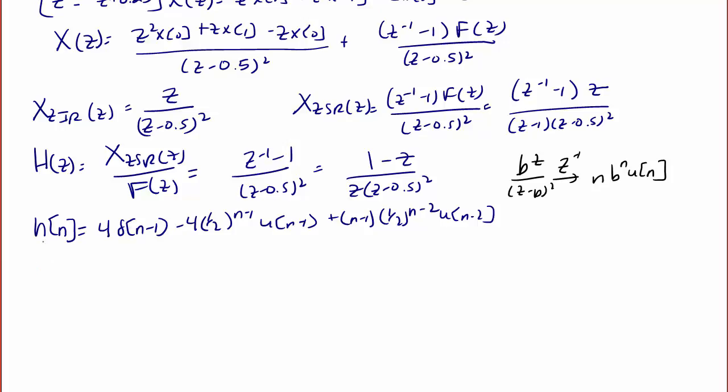Now let's find X_ZIR. We can get this solution directly from the table as well. When we do that, we get x_ZIR(n) = 2n(0.5)^n u(n). Next,